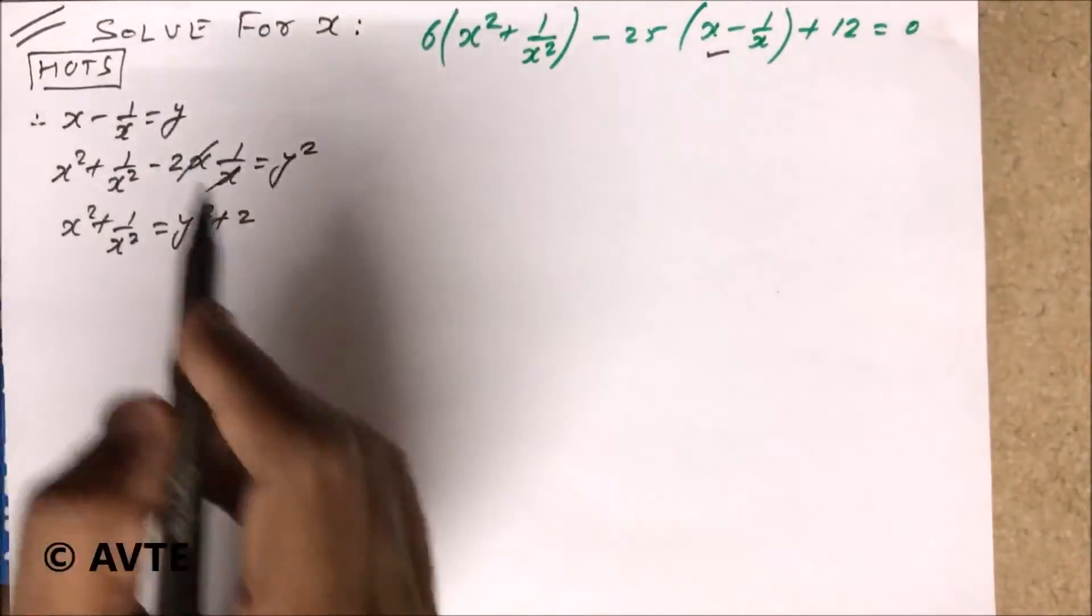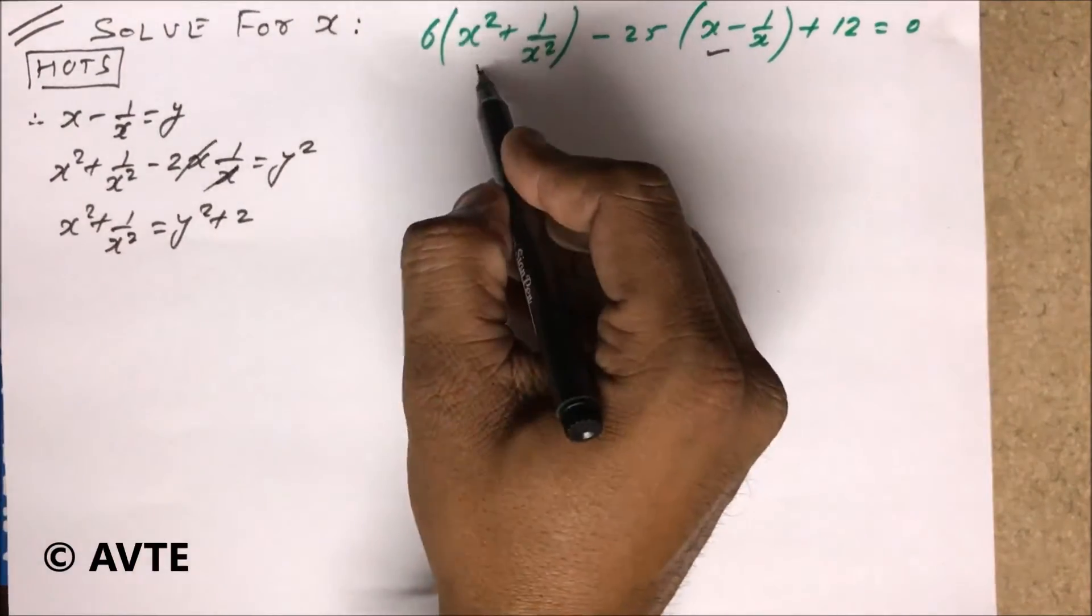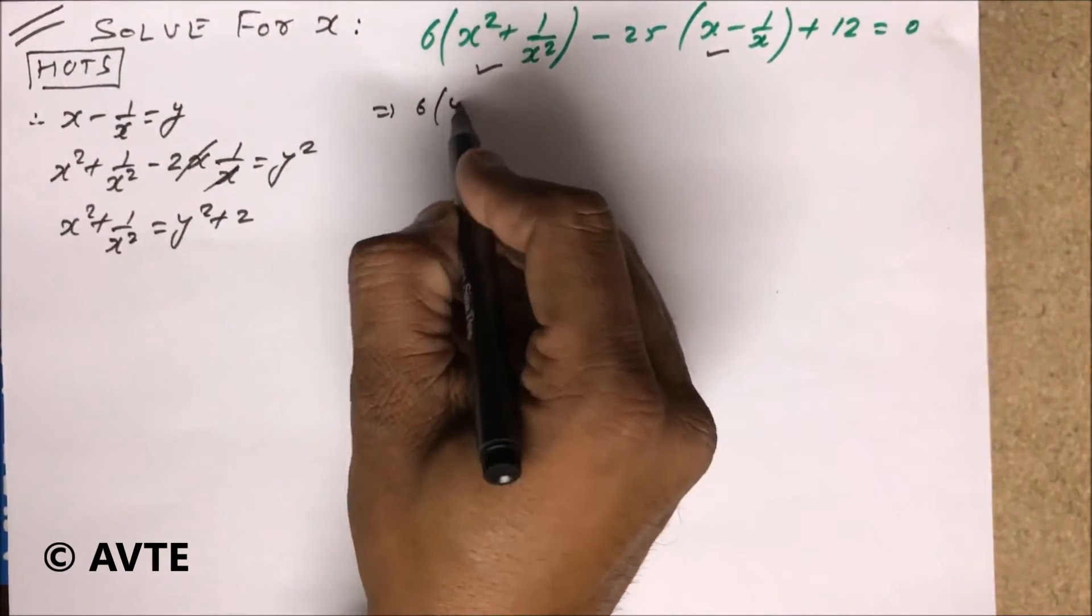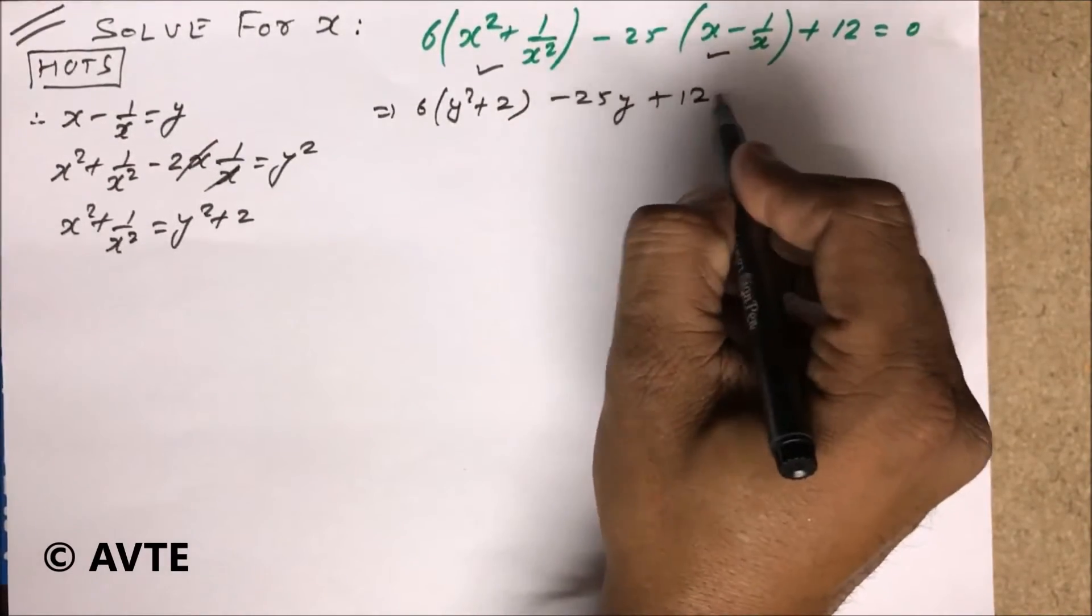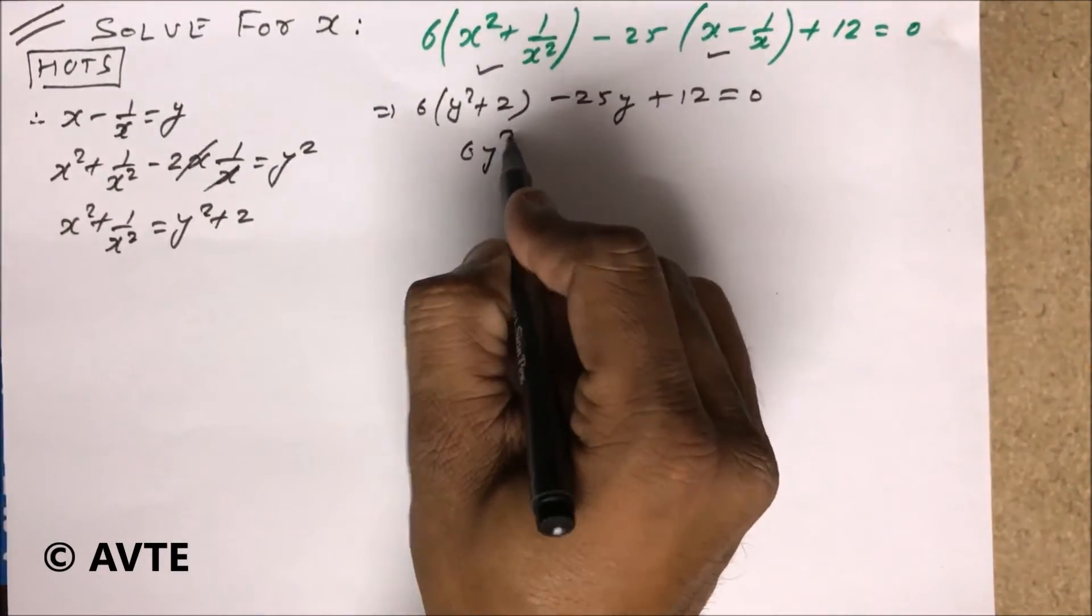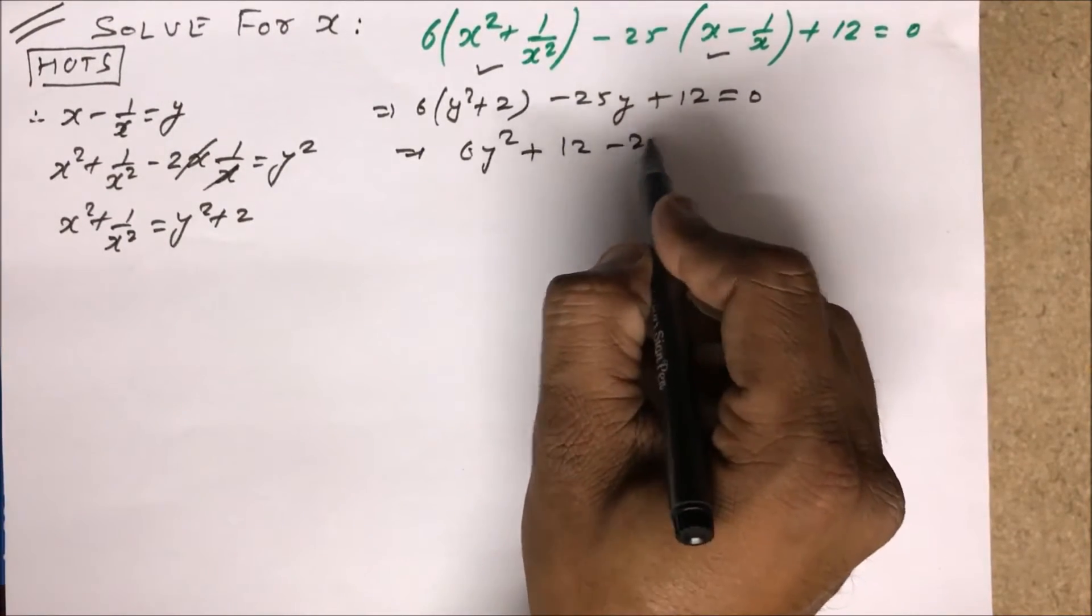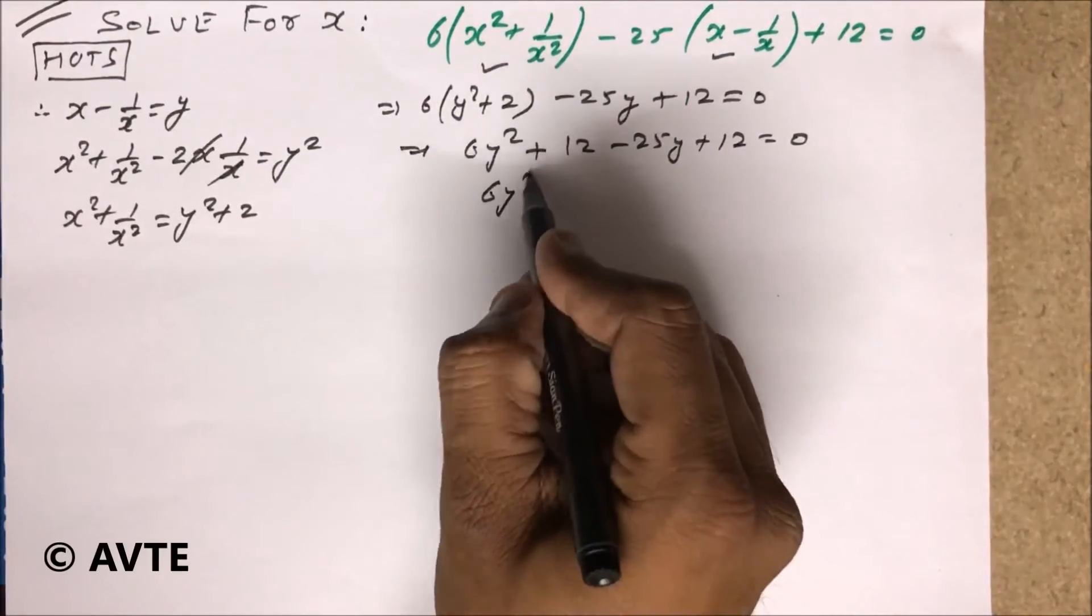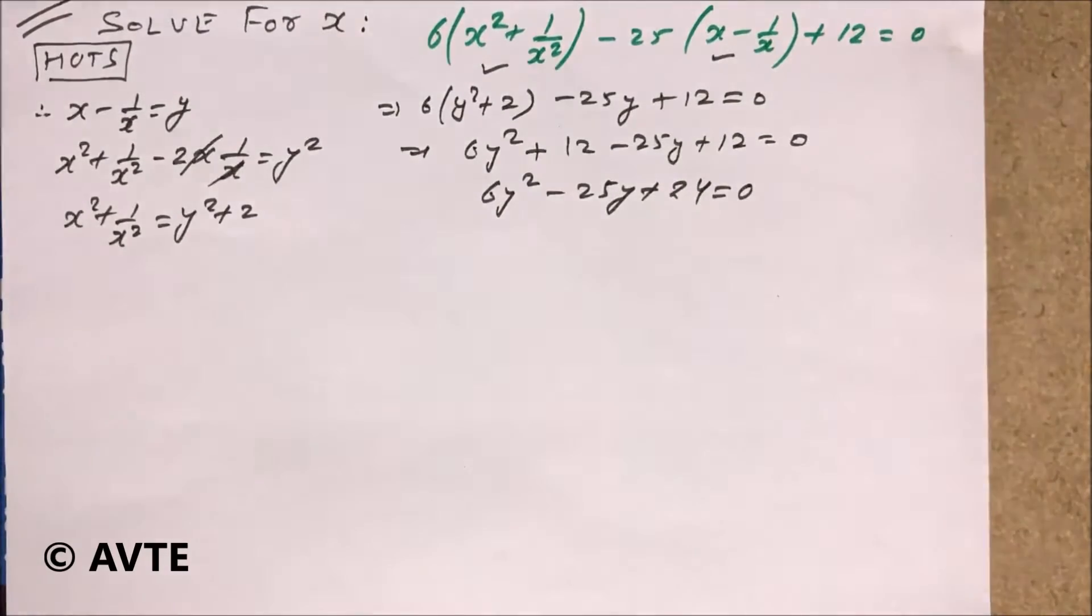So we just substitute the value of this as y and this as y square plus 2 in the given equation. So 6 bracket y square plus 2 minus 25y plus 12 is equal to zero. This is going to be quadratic in the variable y. So you have 6y square minus 25y plus 24 is equal to zero.